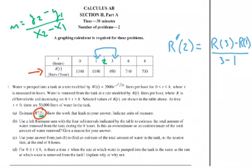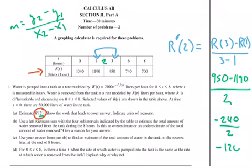So we do that, this is going to give me 950 minus 1190, 3 minus 1 is 2. 950 minus 1190 is going to get me negative 240 over 2, which gets me negative 120.